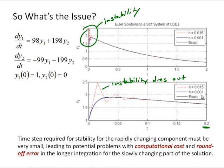I've also got the time step of 0.001 here and you can see that the h equals 0.001 is qualitatively, at least, pretty close.